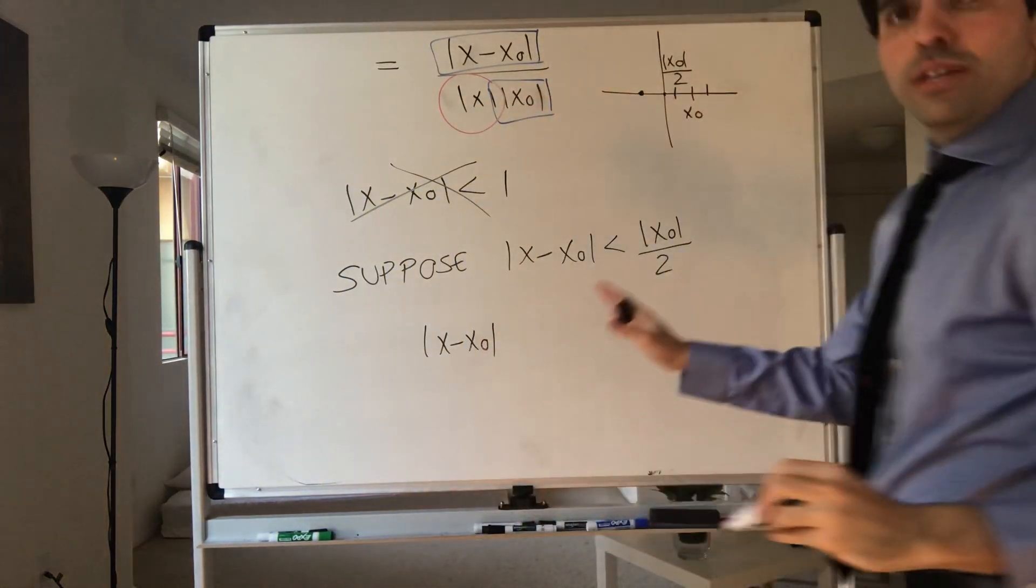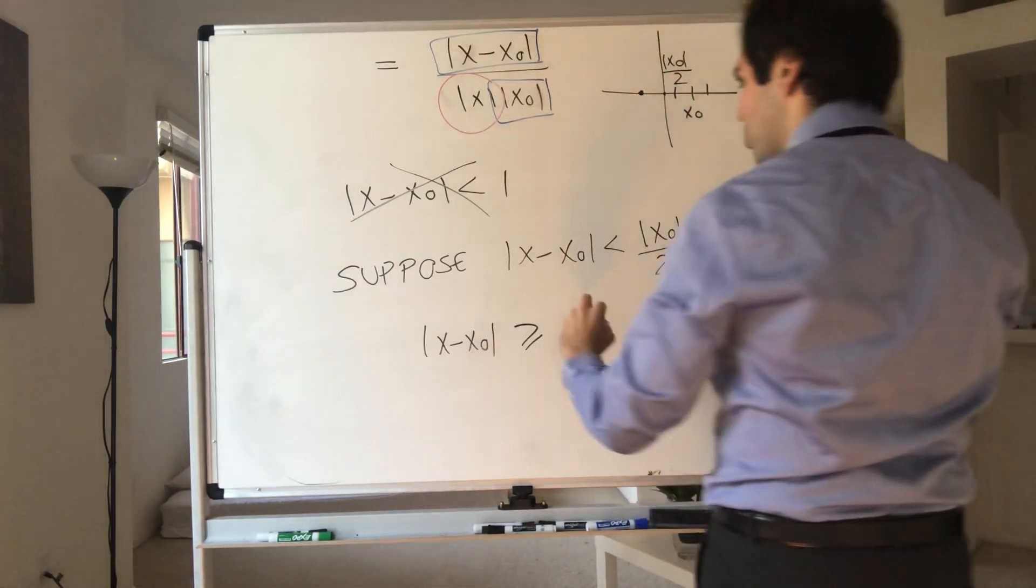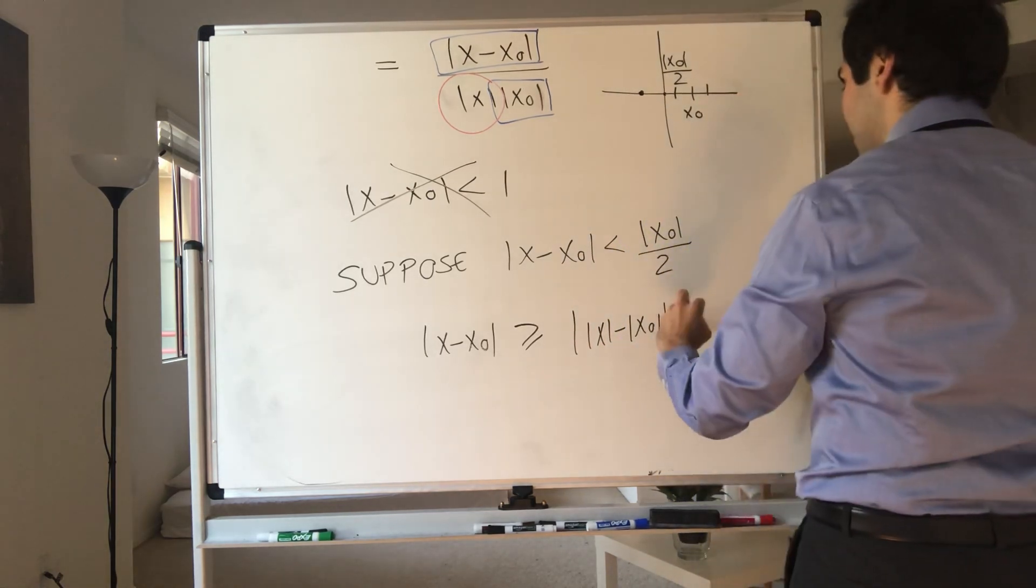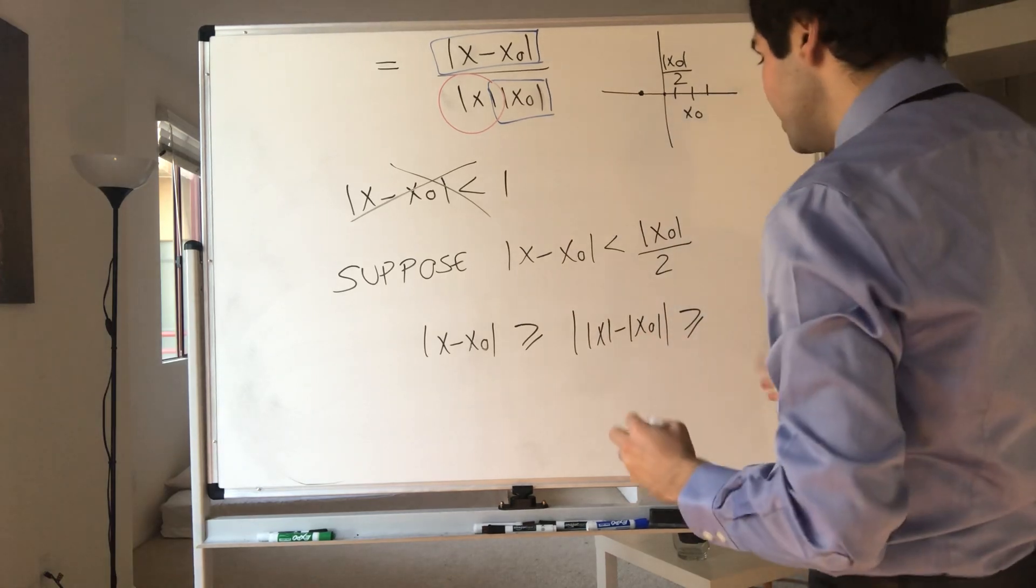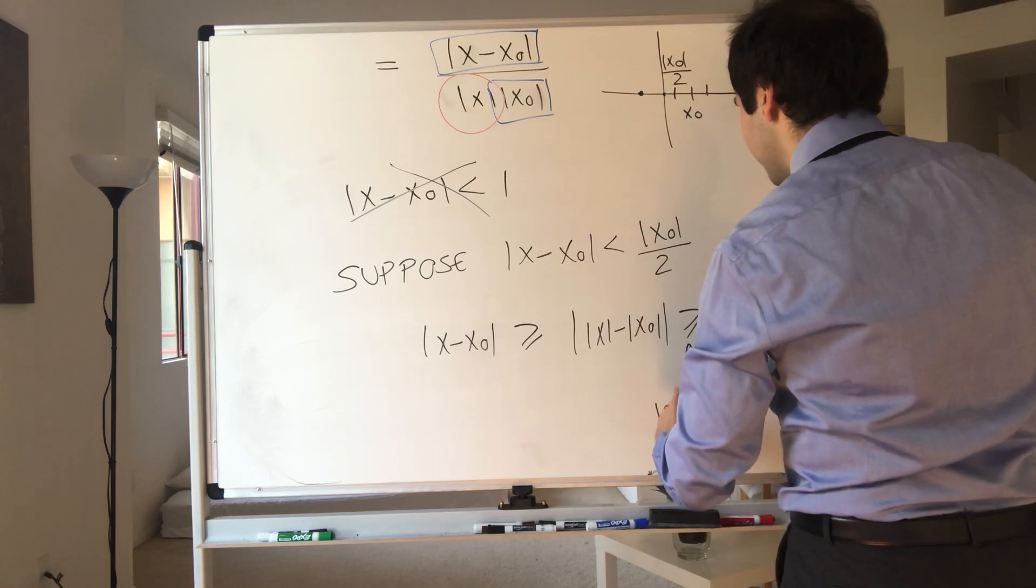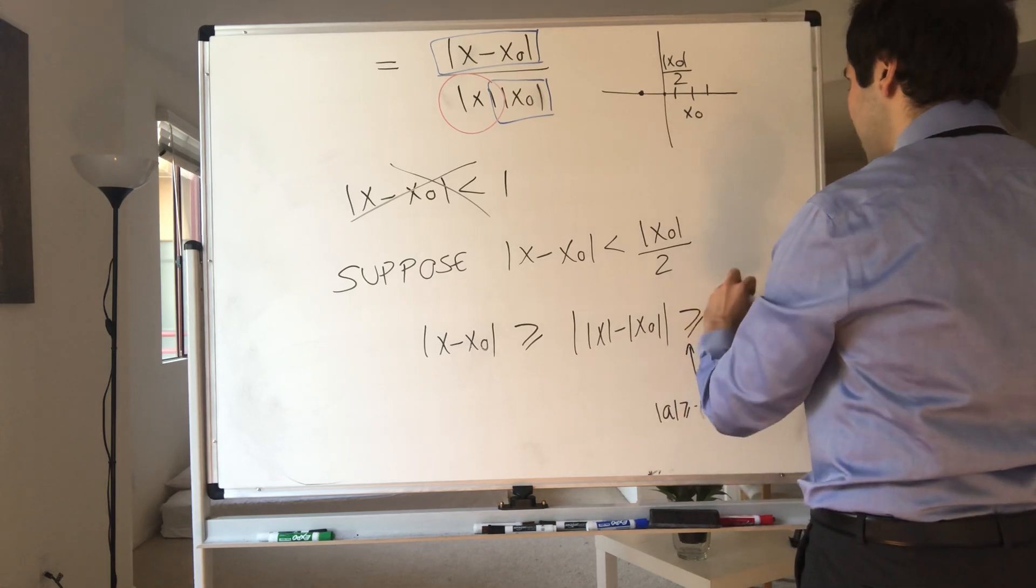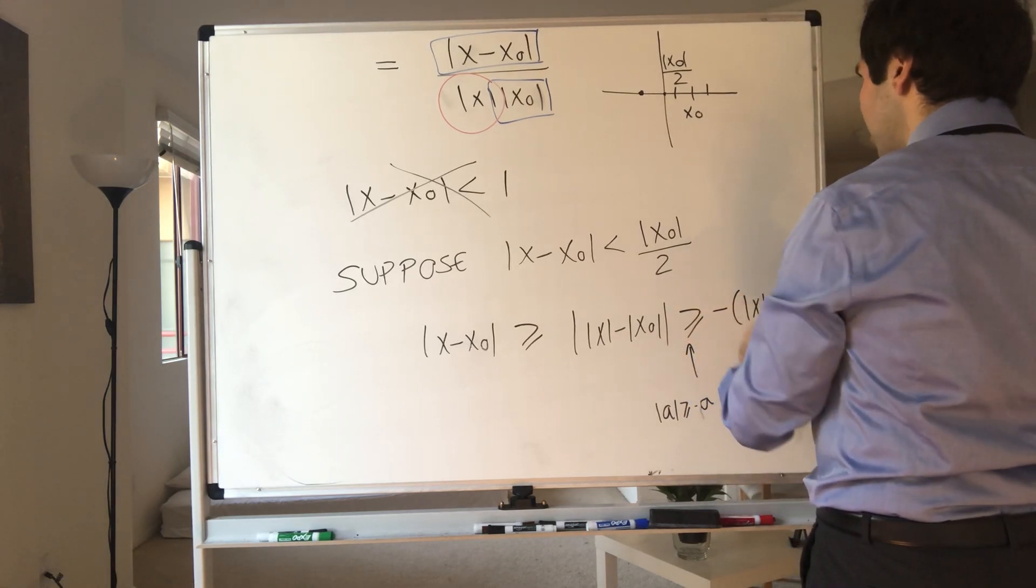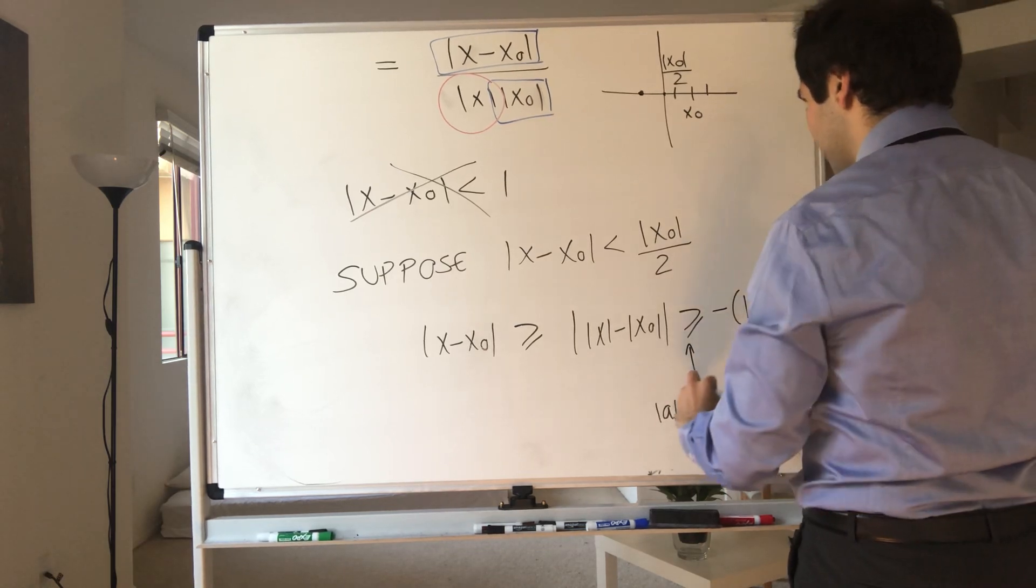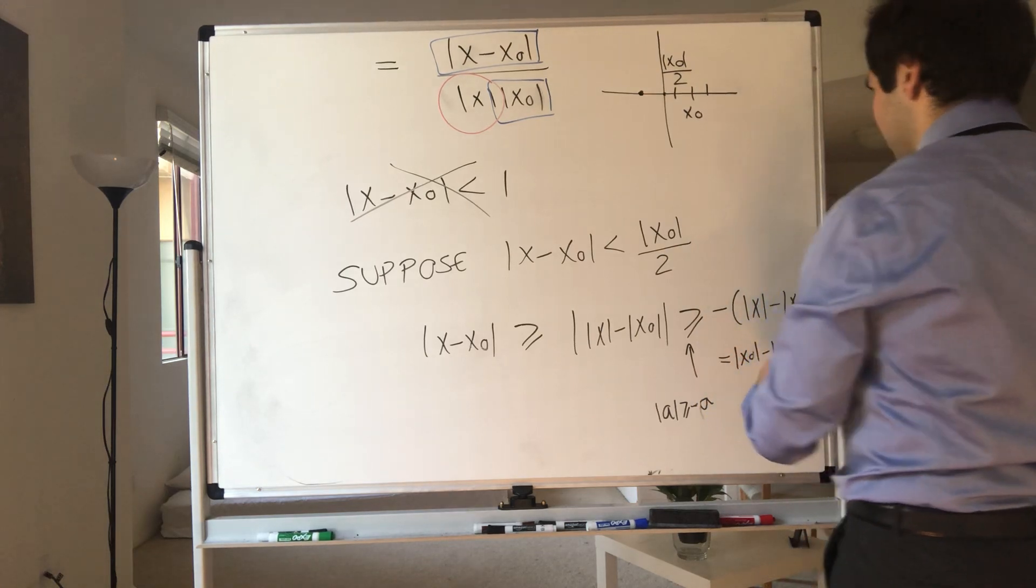Because then what do we know about x minus x naught? Well, because we want to estimate absolute value of x, let's apply the reverse triangle inequality. So this is x minus x naught. And in general, a is greater or equal to minus a. So the absolute value of a is greater or equal to minus a. So this becomes greater or equal to minus absolute value of x minus absolute value of x naught.